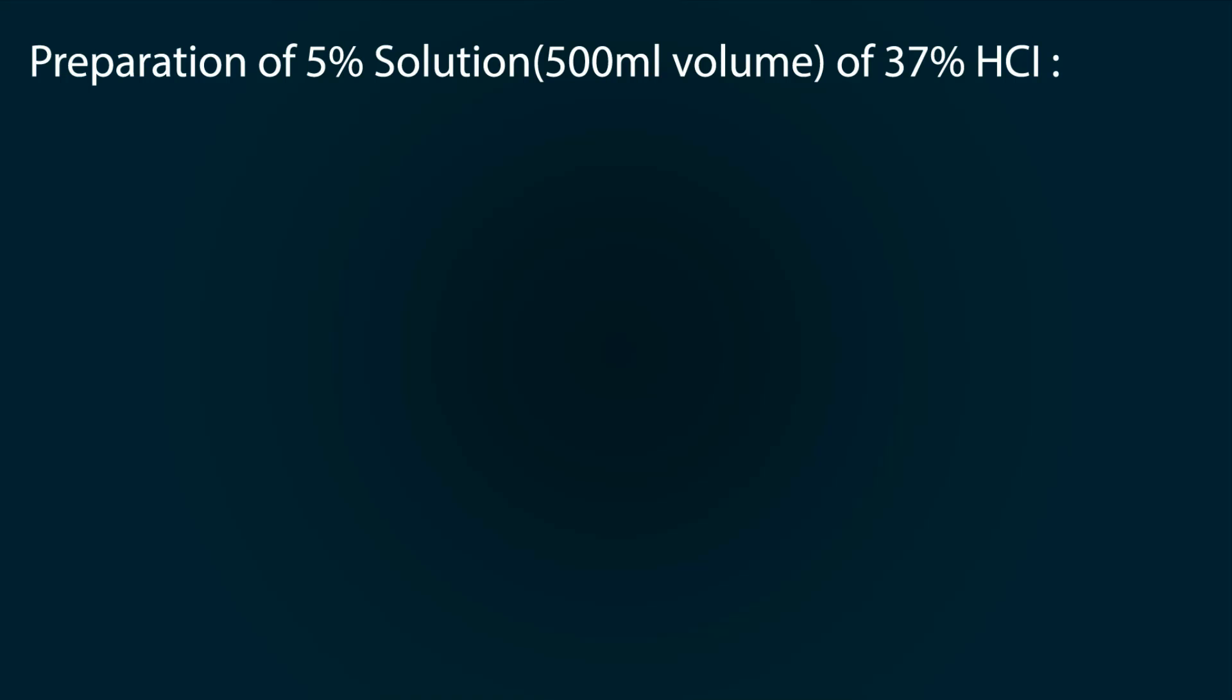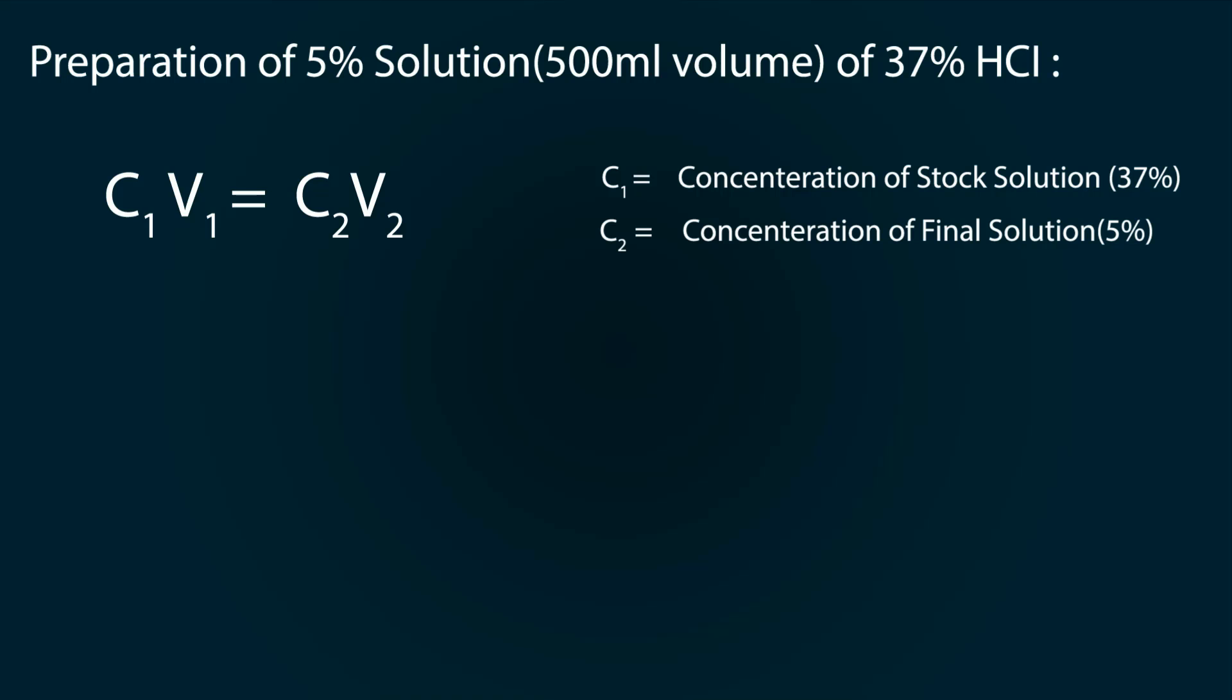The formula of concentration is C₁V₁ = C₂V₂, where C₁ is the concentration of HCl that you will get from the market and that is 37%. C₂ is the concentration of our final solution, that is 5%.